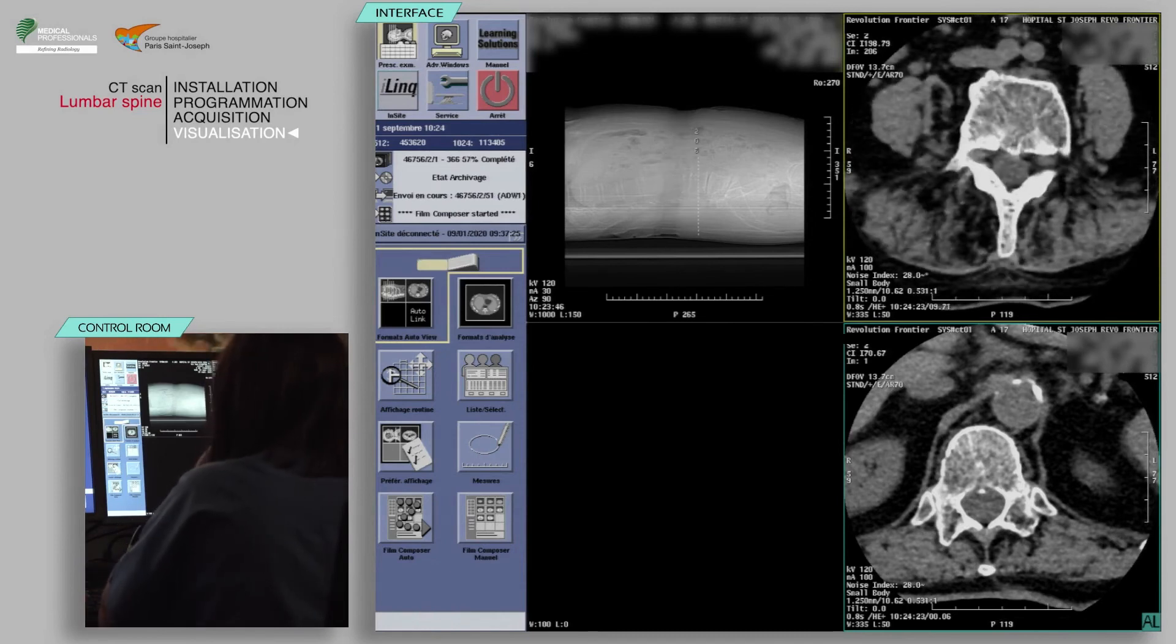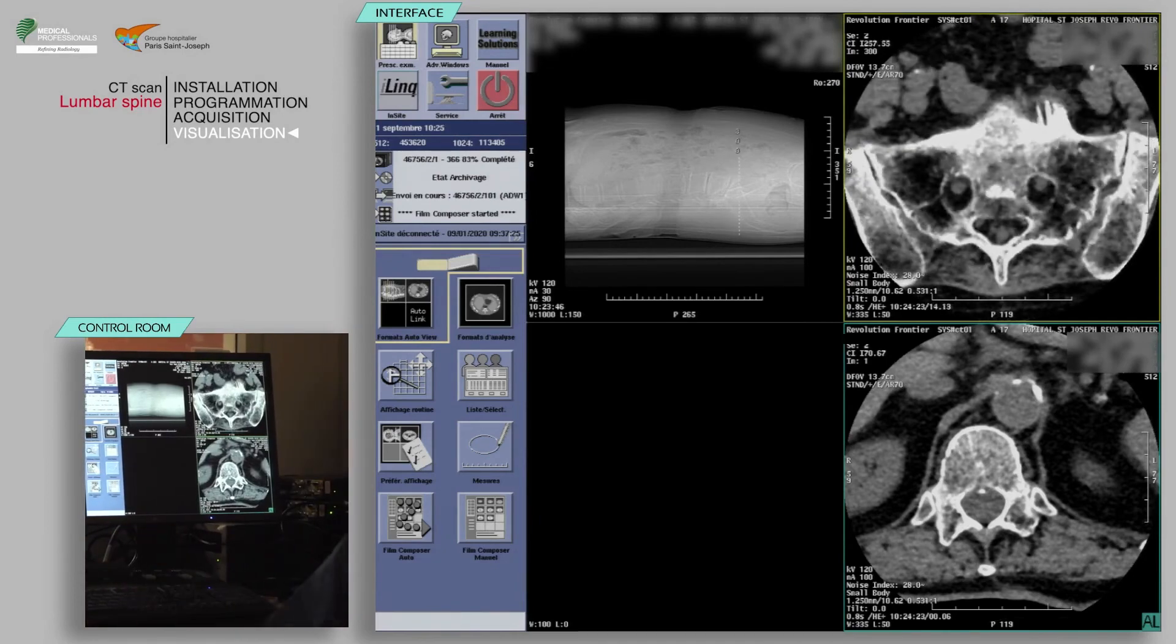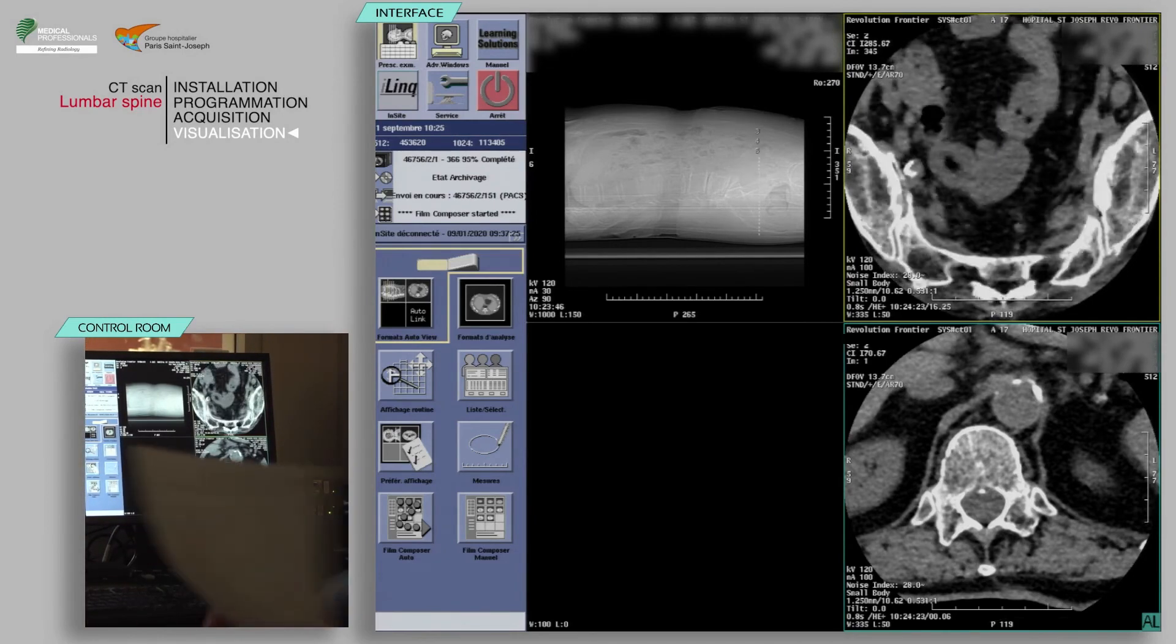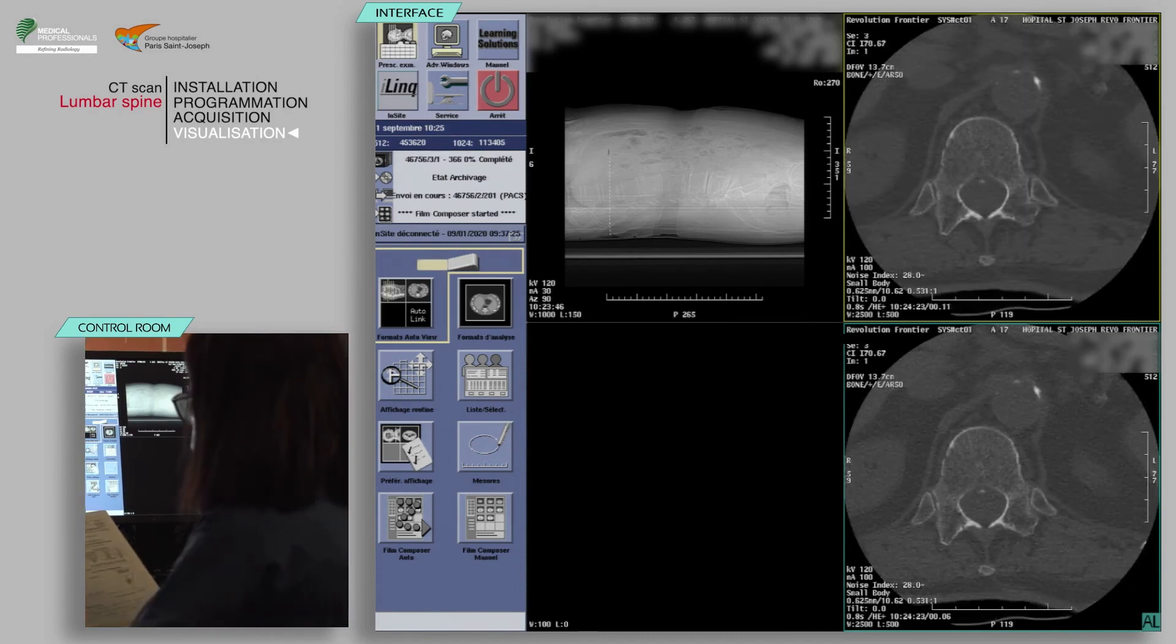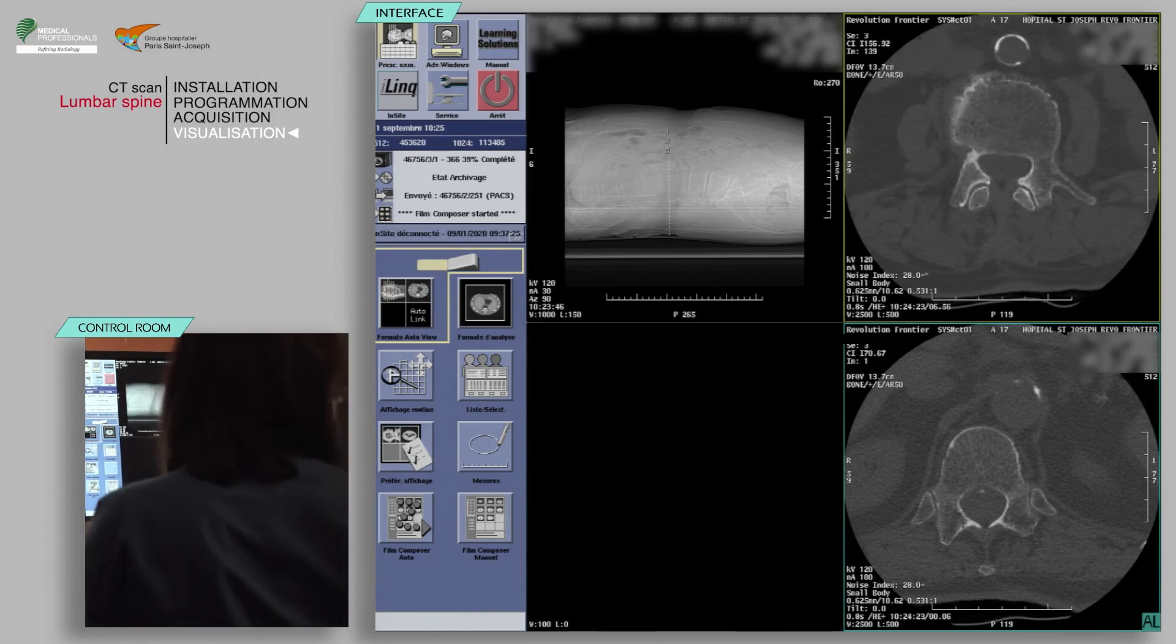The visualization of the spine in the sagittal and coronal plane is essential in case of spinal trauma. A set of axial reconstructions, each in the plane of the disc spaces, is appreciated for a study of disc spaces and spinal nerve roots.